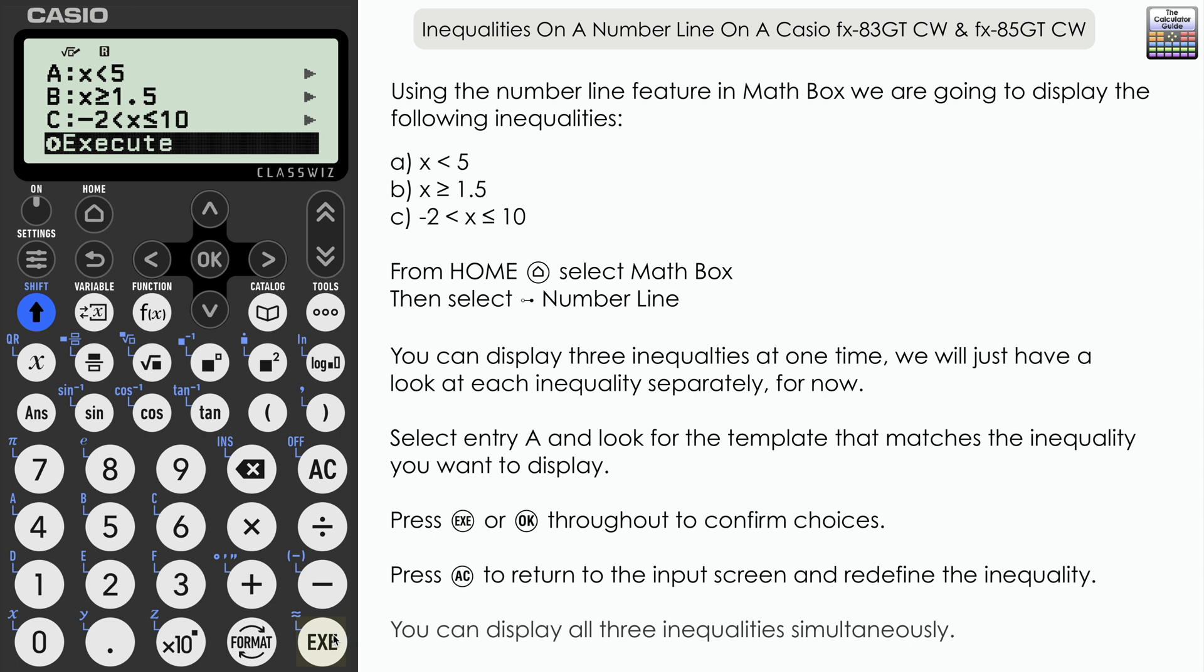And I've just now gone back to input the three inequalities all together this time in slots A, B, and C, just to show you that they can be displayed together. And so if I confirm that with execute, you can see here all three number lines are displayed at once. And you can scroll down to highlight which ones which. And of course you could use this to investigate what region or maybe what integer values satisfy a group of inequalities.